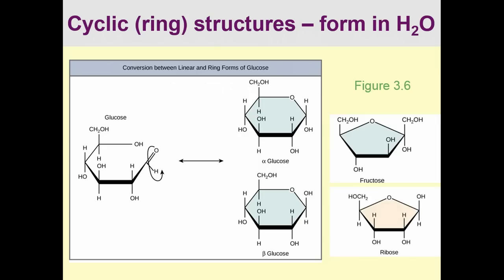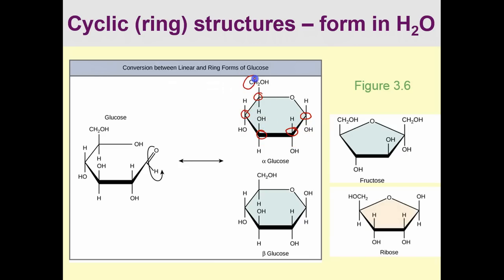We've been showing these sugars in their straight, linear forms. However, in water they actually form a hexagonal ring structure. What happens is the straight chain binds together on the two ends to form a ring form. In the ring form, our carbons are at each kink in the molecule. Remember, glucose has 6 carbons, so we have 1, 2, 3, 4, 5, and carbon 6. Every time you see a kink in the molecule, that represents a carbon.